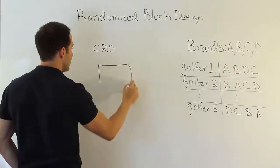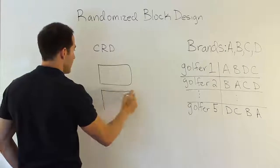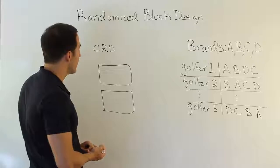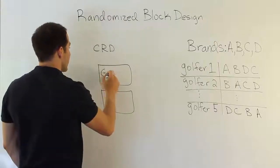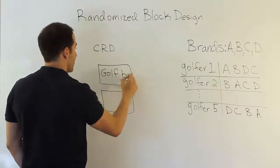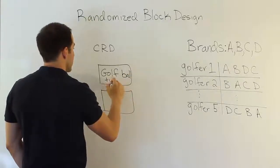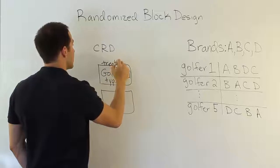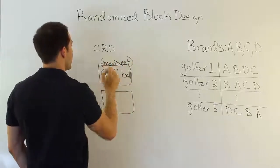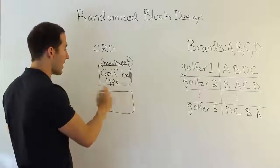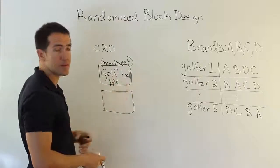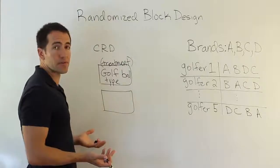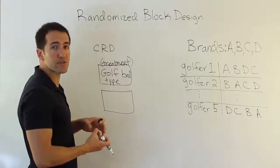We try to explain it by splitting it into two categories. We basically say, look, the differences we see in those distances achieved by the golf balls, they're due to the type of golf balls. Golf ball type. This is generically called the treatment. But that's the golf ball type, type A, B, C, or D. That's one reason why the balls travel different distances, because the balls are different, the type of construction of them is different.